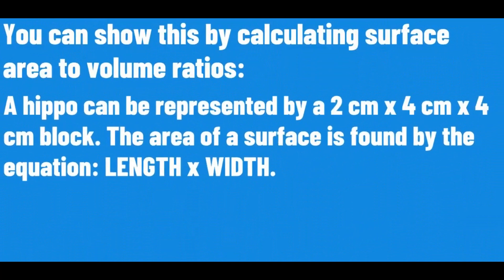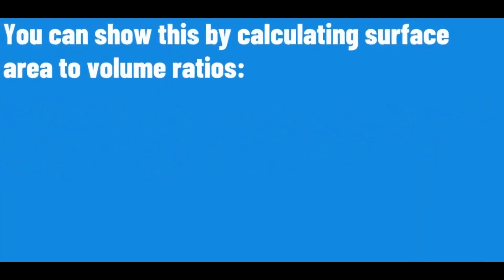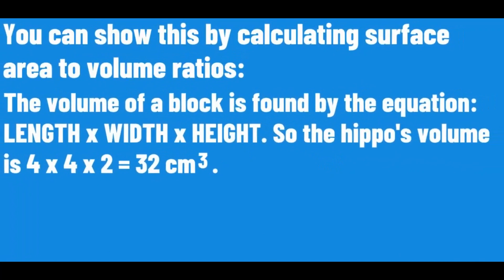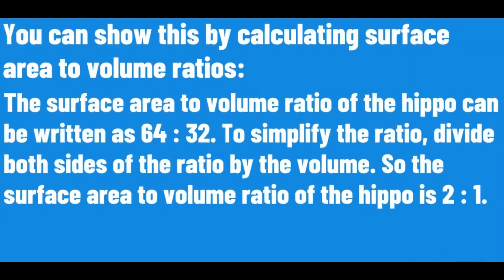You can show this by calculating surface area to volume ratios. A HEPA can be represented by a block. The area of a surface is found by the following equation, so the HEPA's total surface area is 64 cm². The volume of a block is found by the following equation, so the HEPA's volume is 32 cm³. The surface area to volume ratio of the HEPA can be written as 64 to 32.